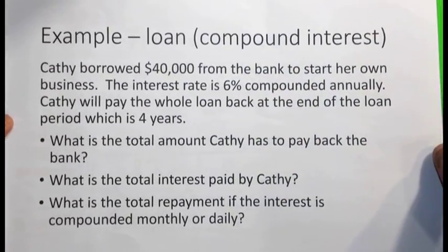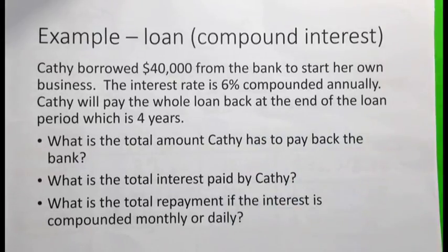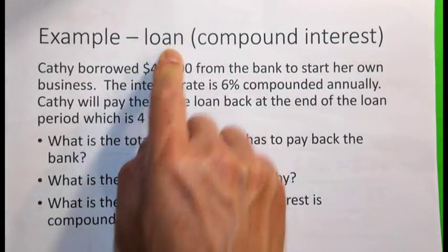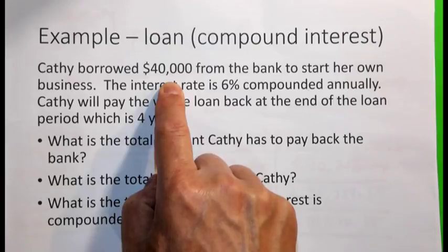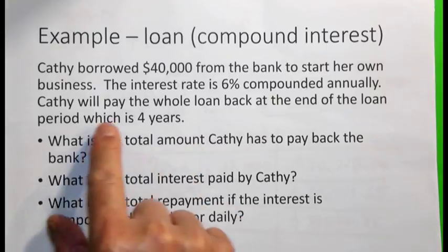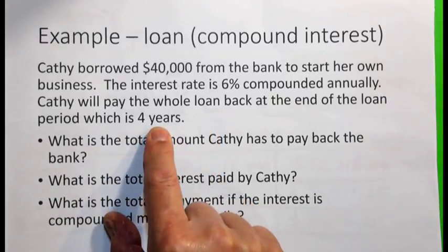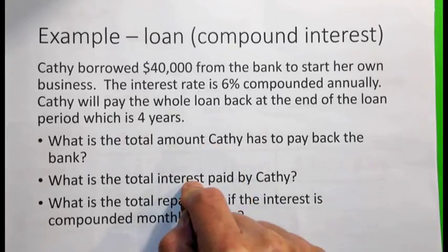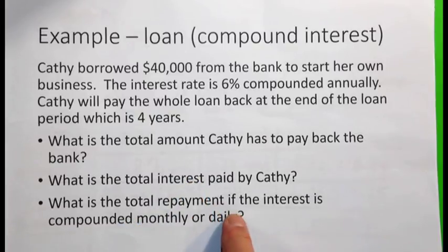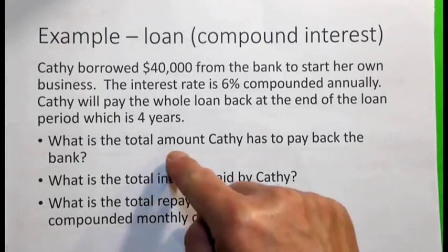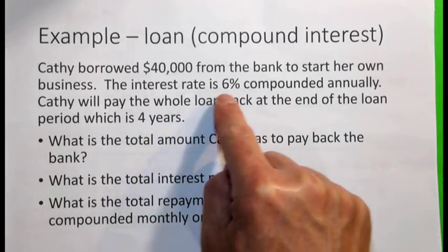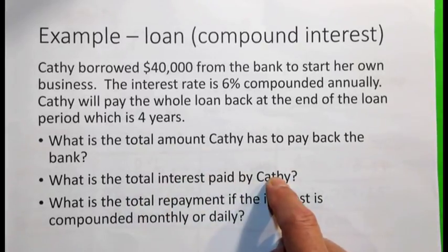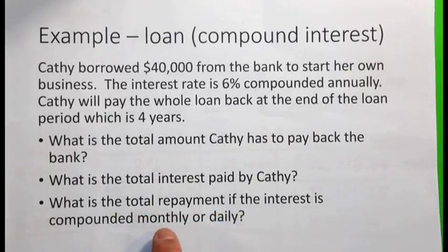Pause the video for 5 minutes and work on this example. Kathy borrowed $40,000 from the bank to start her own business. The interest rate is 6% compounded annually, and Kathy will repay the whole loan at the end of 4 years. Work out how much Kathy has to pay back after 4 years and what the total interest paid is. Then consider what the total repayment would be if the interest were compounded monthly or daily.